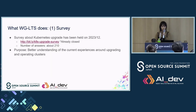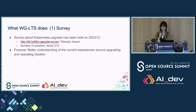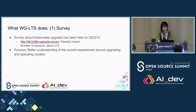I will introduce two activities of the LTS Working Group. One is a survey about Kubernetes upgrades, which was held last December. This survey has already been closed, but I will introduce some results.